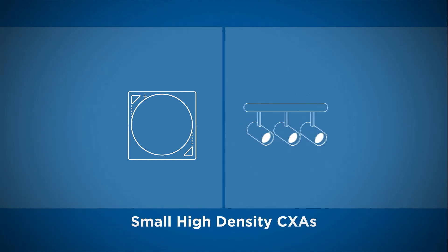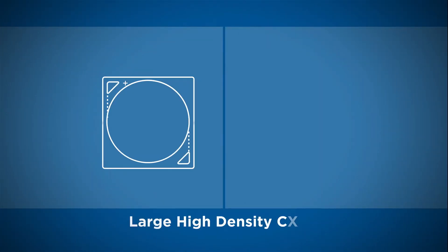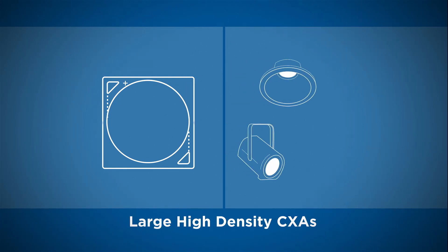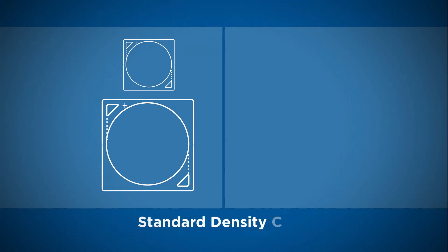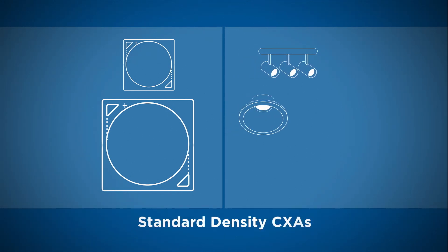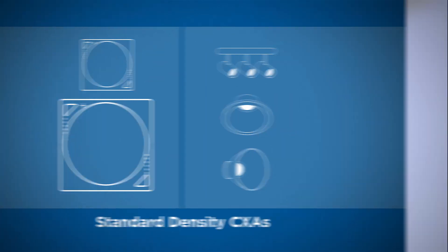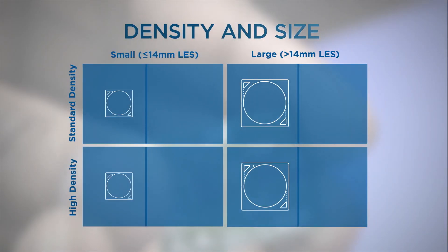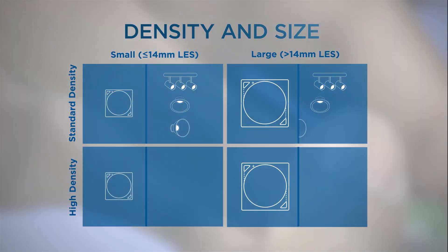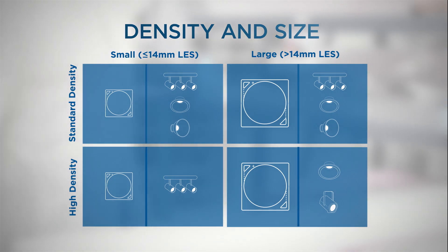Small, high density CXAs can replace high output track lights. Large, high density CXAs can replace high ceiling down lights and stage spot lights. Standard density CXAs can replace anything from track lights and down lights to high bay lights and wall packs. So you can see that CXAs can offer a wide variety of solutions to your lighting needs.